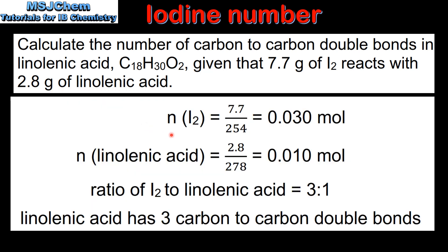In this example we first have to calculate the number of moles of iodine and linoleic acid. The number of moles of iodine equals 7.7 grams divided by the molar mass of iodine, which is 254. This gives us 0.030 moles of iodine. Next, the number of moles of linoleic acid is 2.8 divided by the molar mass of linoleic acid, which is 278, giving us 0.010 moles.